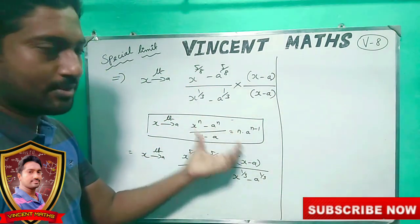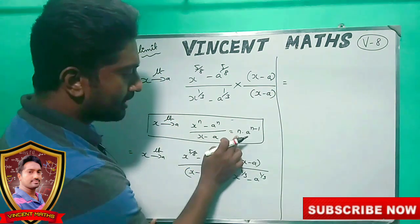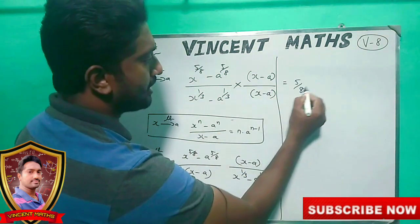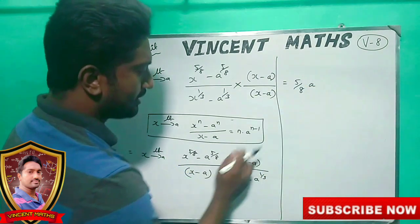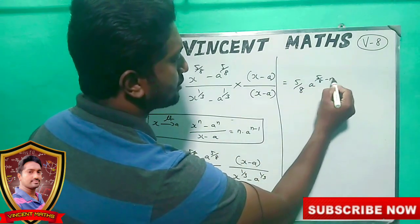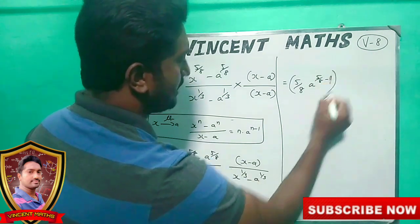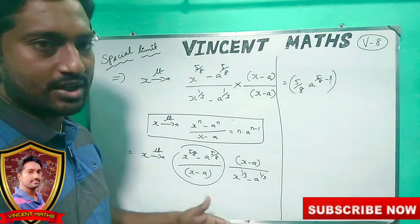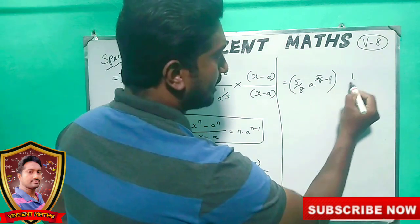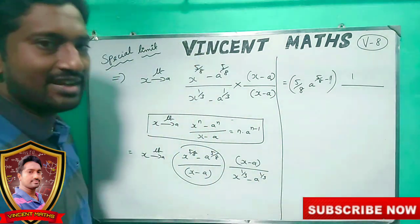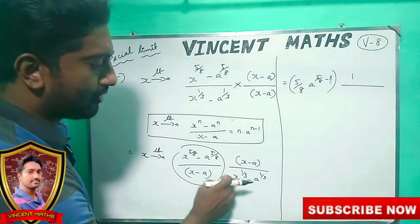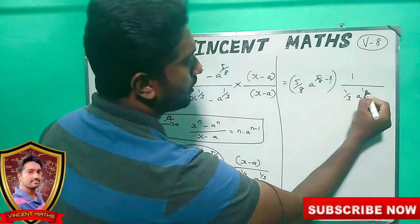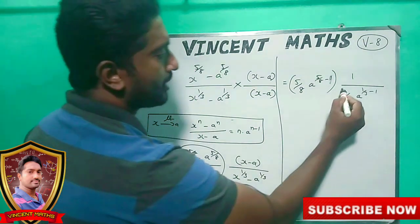We substitute in this formula. If we substitute in this formula: n into a power n minus 1. If n is 5 by 8, then a power n minus 1: n is 5 by 8 minus 1. This formula is reciprocals — 1 by 3. So, n minus 1: 1 by 3 minus 1.